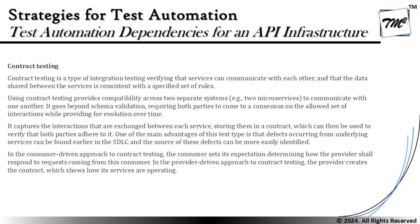Contract testing provides compatibility across two separate systems to communicate with one another. It also goes beyond schema validation, requiring both parties to come to a consensus on the allowed set of interactions while providing for evolution over time. So contract testing is essentially implementing and verifying the contract agreement conditions to check that the systems are behaving according to those agreed rules.